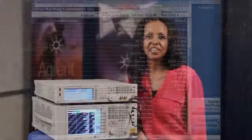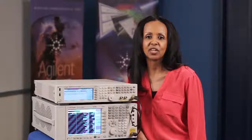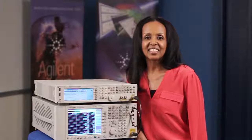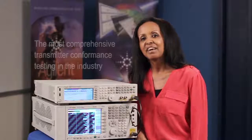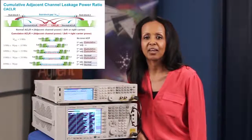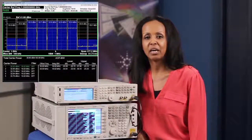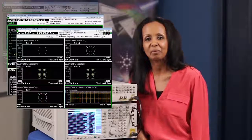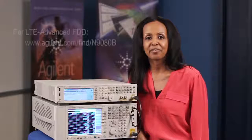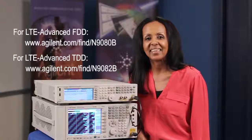This completes our tour of the LTE Advanced measurement application for performing base station transmitter RF conformance testing as defined by 3GPP. The X-Series LTE Advanced measurement application provides the most comprehensive transmitter conformance testing in the industry. For non-contiguous carrier aggregation, I showed you the RF requirements, particularly cumulative ACLR and cumulative spectrum emission mask. For contiguously allocated component carriers, you saw a quick demo of ACLR and spectrum emission mask. In addition, you looked at the demodulation measurements where demodulated results of all component carriers are displayed side-by-side. For more information and a free 30-day trial license, please visit the links on the screen. Thank you.